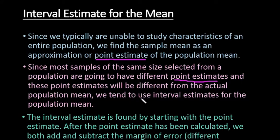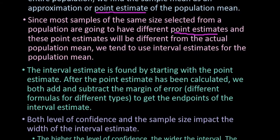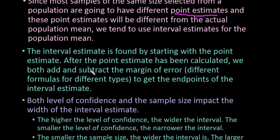A lot of times we will use an interval estimate, which is another name for a confidence interval. The interval estimate is found by starting with your point estimate. After you have found your point estimate, we both add and subtract the margin of error. This gives us a range of values, and we hope that our interval estimate actually contains the true population mean.